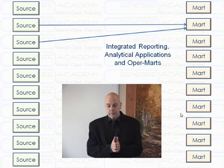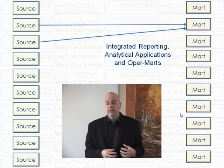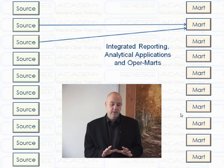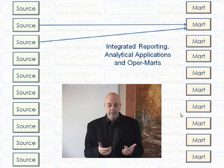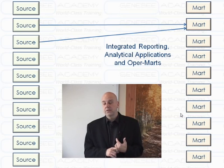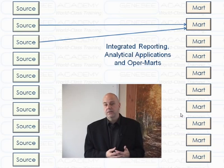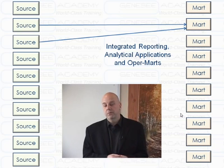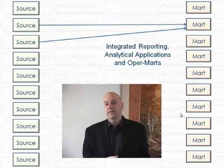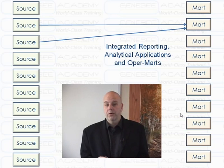If you go to the next level, we're saying I'm going to take data from more than one source system and create a mart. In this case, you're doing integrated reporting — integrating data from more than one system. In my prior example, we said SAP single instance, and I have this report that could be deemed as an ODS or warehouse, but keep in mind there's no integration happening there. Here, we actually have multiple sources being combined to form a report: integrated reporting, analytical applications pulling data from more than one place, and potentially operamarts — things that are more operationally oriented but have an integration component.